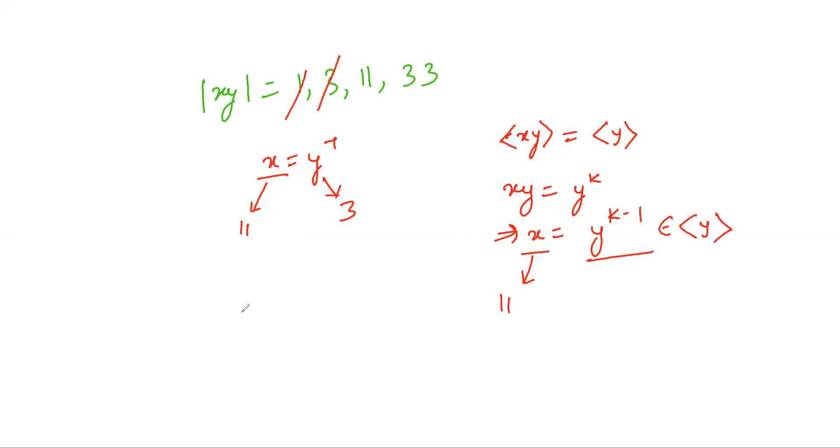Suppose the order is 11, then the subgroup generated by xy is the same as the subgroup generated by x, which implies